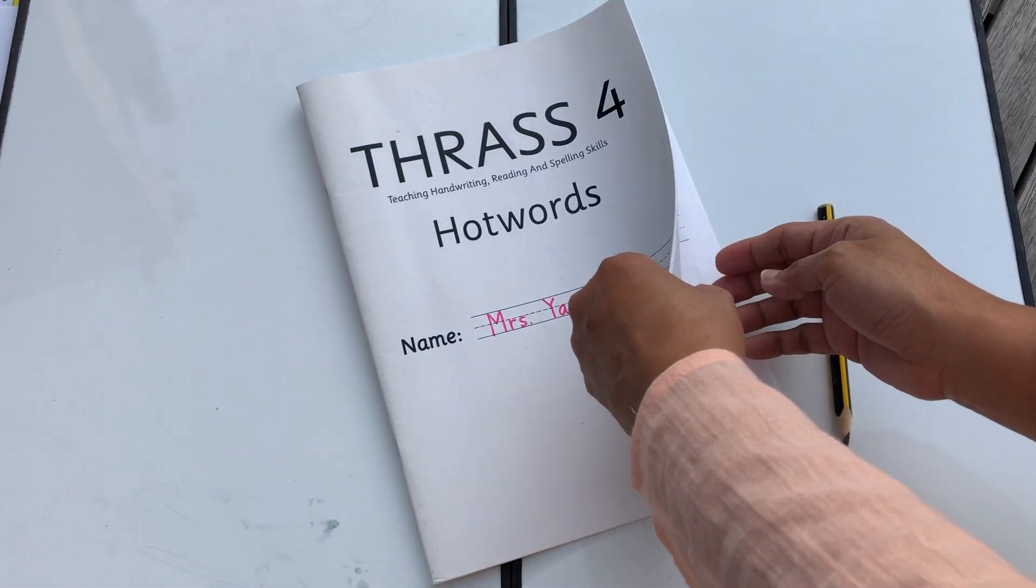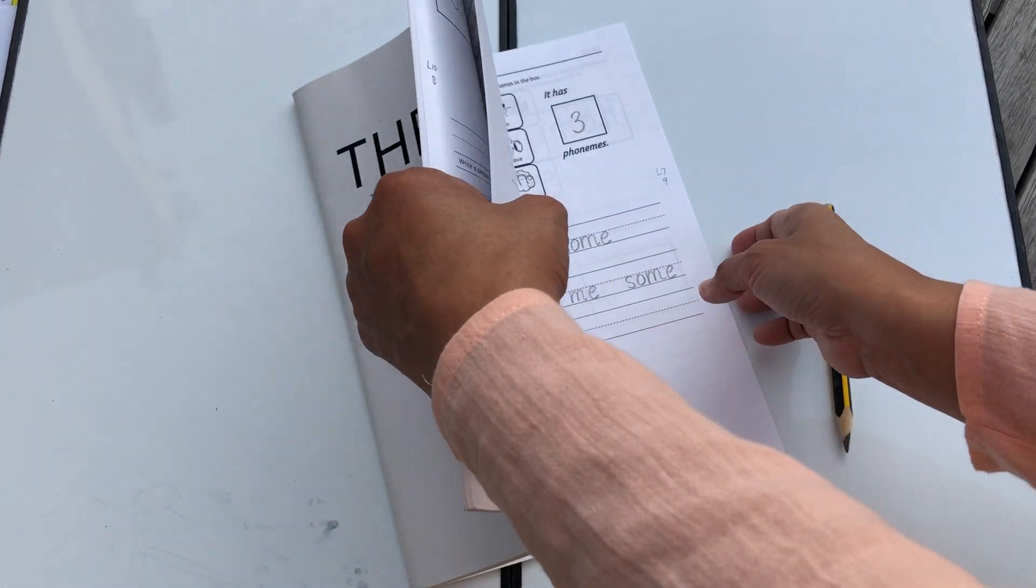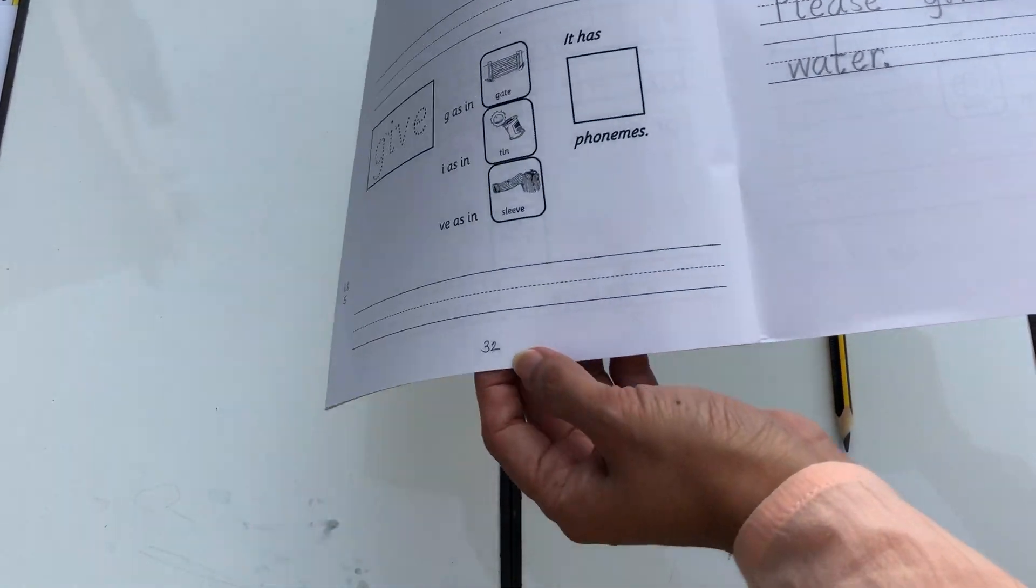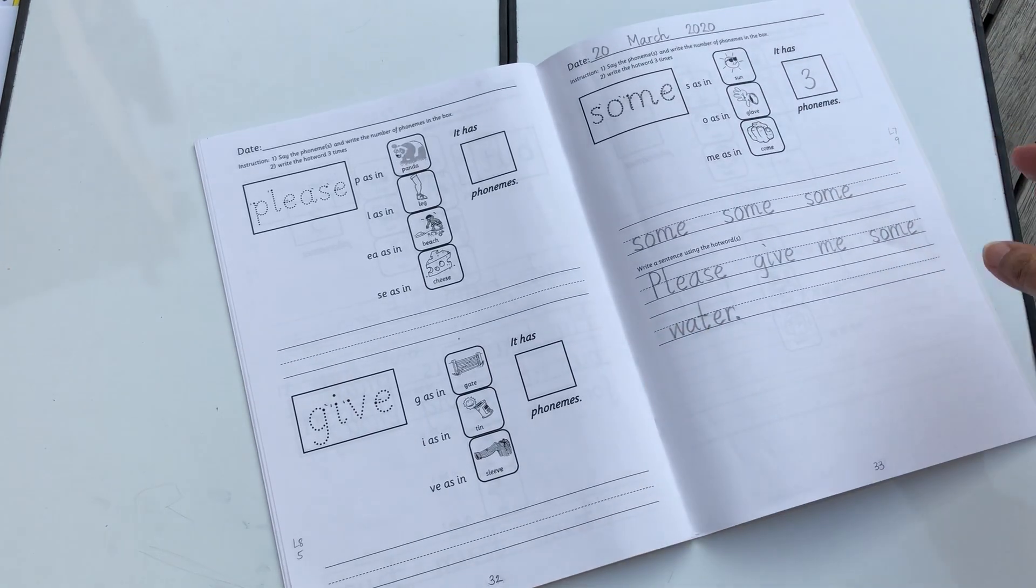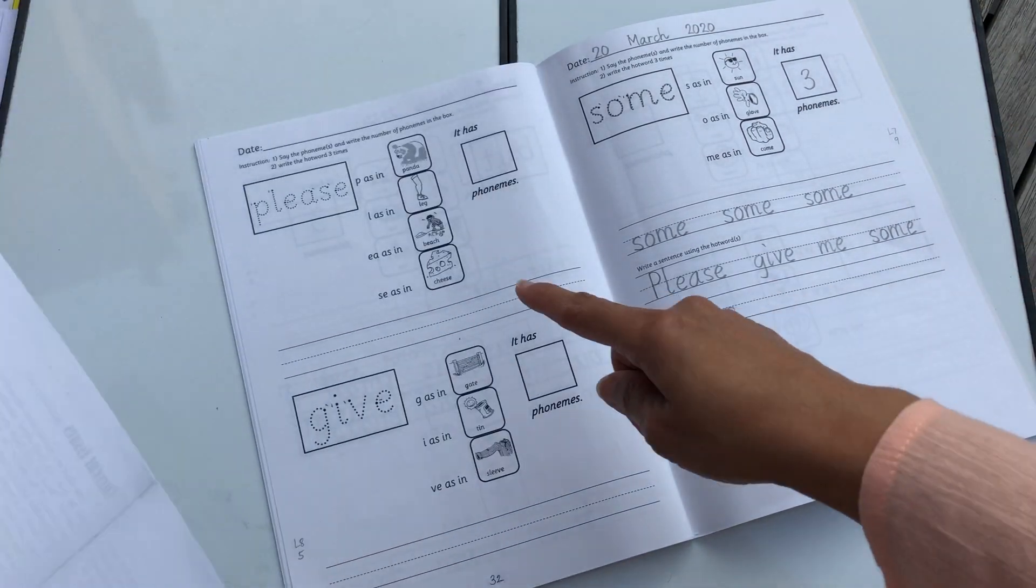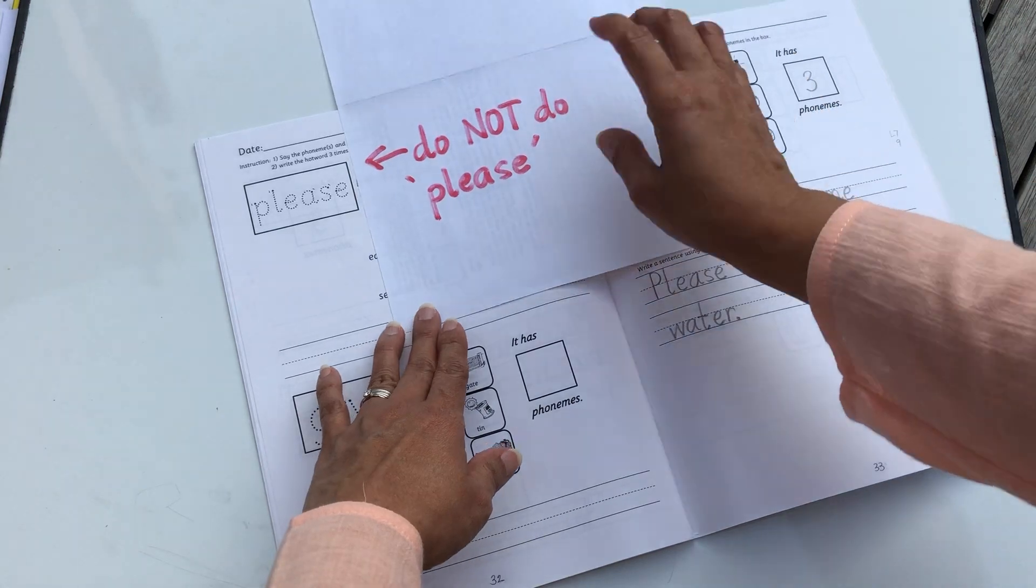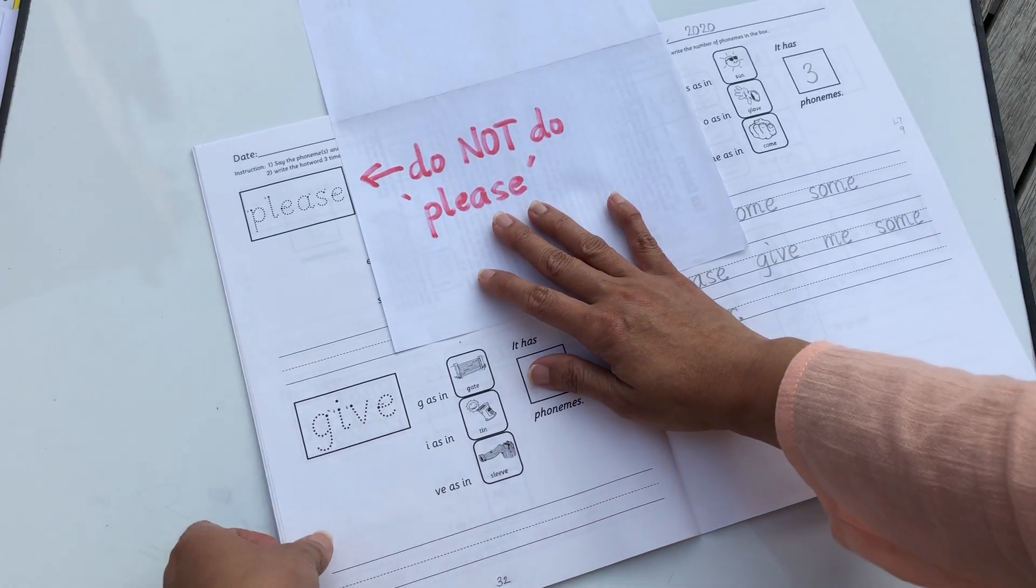Please turn your Fast 4 Hot Words workbook to page 32. It's here, 32. If you have the page number, if not, you can go ahead and find it. So on the top there's a word, please. We are not going to do the word please, okay?